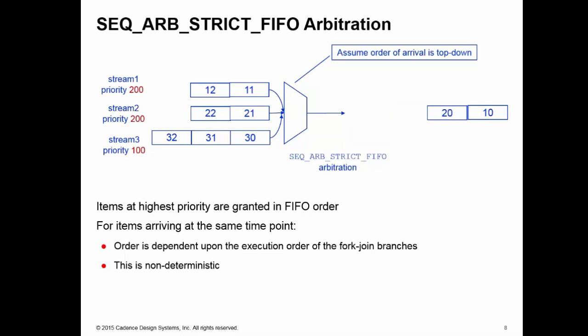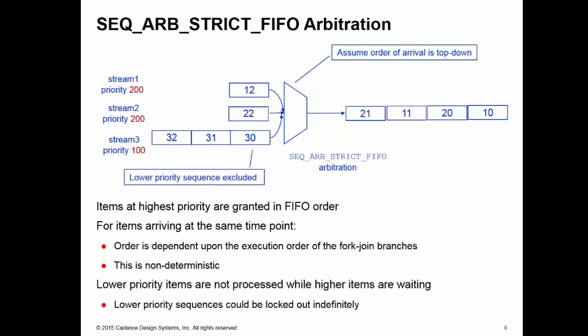Now we're picking again the items at the highest priority, so we're back to picking item 11 from stream 1, followed by 21 from stream 2. Because stream 3 has lower priority, if we receive a constant stream of data from 1 and 2, then stream 3 items may never be executed. The lower priority sequence stream 3 may be completely locked out. You need to bear this in mind when choosing this arbitration mechanism.